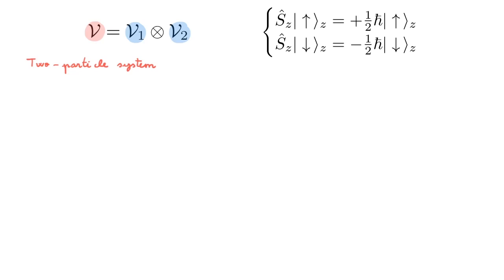This degree of freedom is described by a two-dimensional state space and remember from the videos on spin 1 half that the eigenstates of the Sz operator provide the basis for this state space. These eigenstates are labeled by an up arrow corresponding to eigenvalue plus h bar over 2 and by a down arrow corresponding to eigenvalue minus h bar over 2.